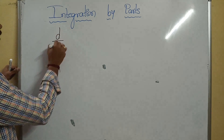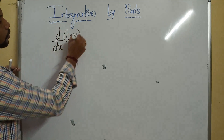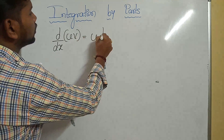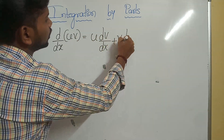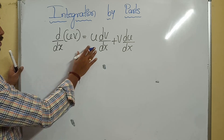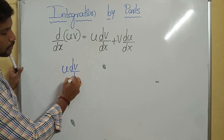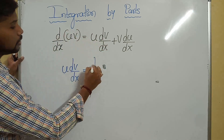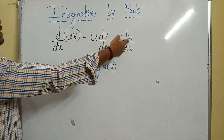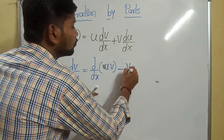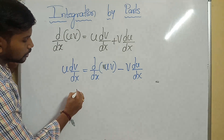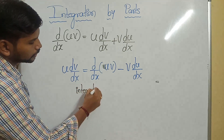Concentrate here. First, what we know already — I'd like to write the derivative of u into v. We know it will be u times derivative of v, plus v times derivative of u. After this, I'd like to write one term on the left-hand side: u dv/dx equals d/dx of (u into v) minus v du/dx.